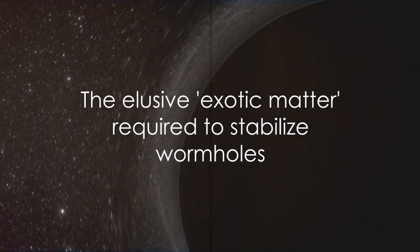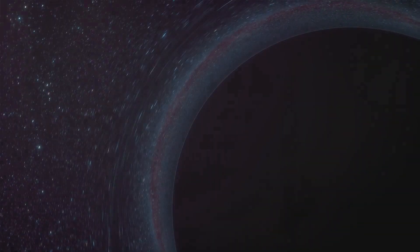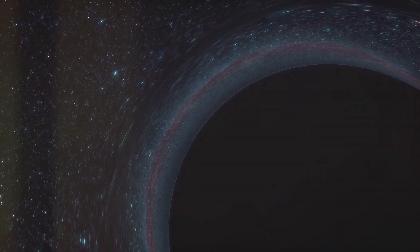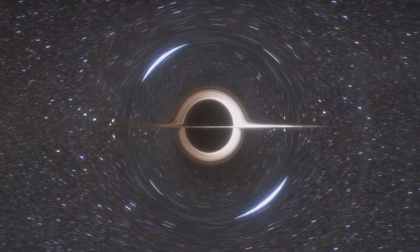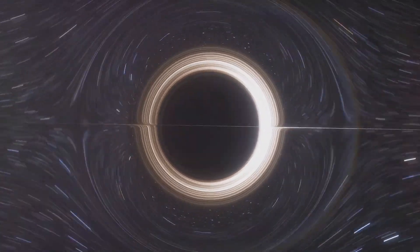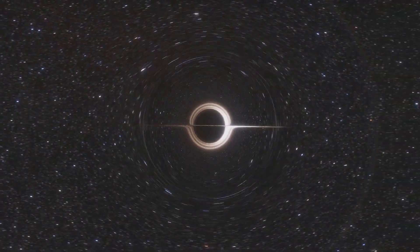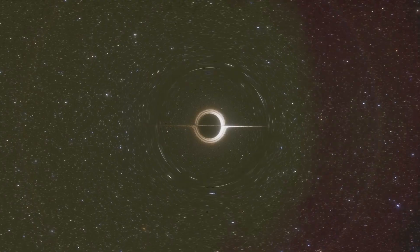The tricky part, however, is that wormholes are incredibly unstable. They open and close so quickly that not even light, the fastest thing in the universe, could pass through. To keep a wormhole open long enough for us to travel through, we'd need something presently unknown to science, often referred to as exotic matter.